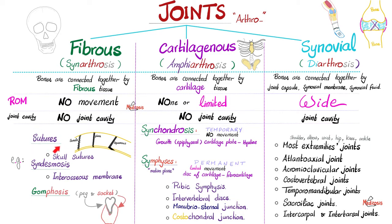The first example is sutures. Some of them are serrate — the margins have saw-like edges, a classic example being the sagittal suture of your skull. Some of them are plain sutures, where both bones are simply fused together, nothing unique. An example is the interpalatine suture of your skull. We'll talk about them later in head and neck anatomy.